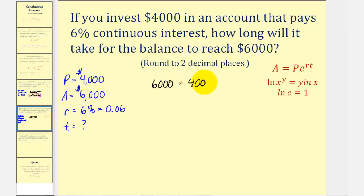We're going to have 6,000 equals P, which is 4,000 times E raised to the power of R times T, or 0.06 times T. So what we're going to do here is isolate the exponential part, or E raised to this power, and then we'll use logarithms to solve for T.